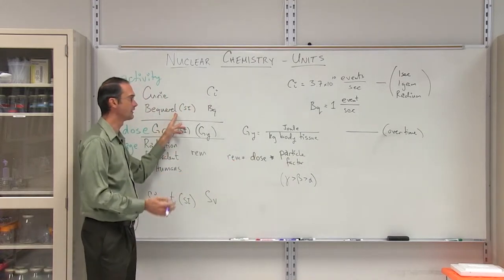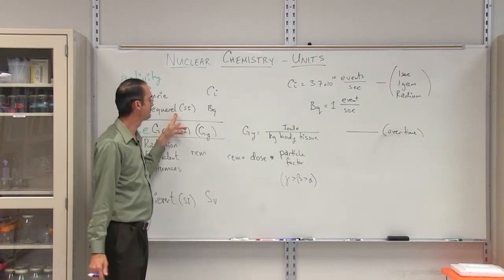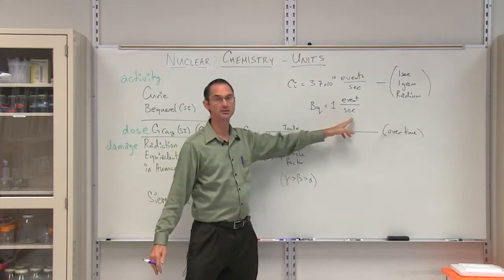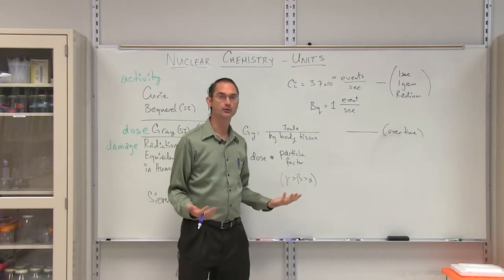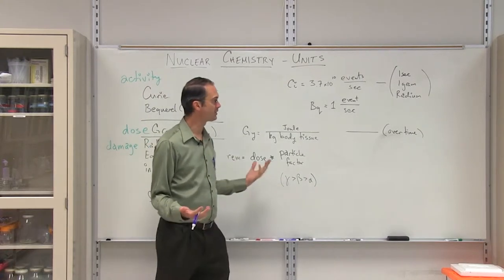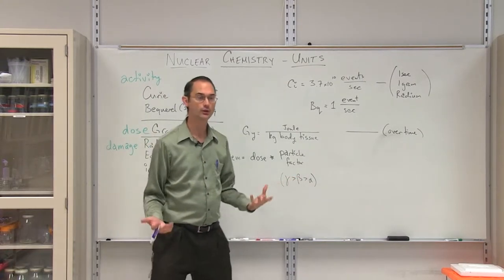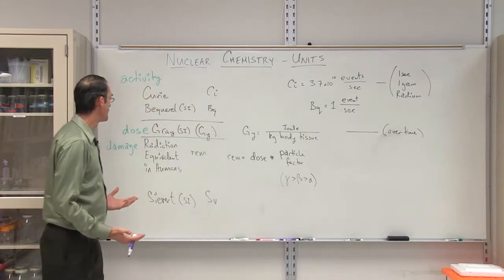The next thing is you have a Becquerel, a much simpler unit, which is simply one event per second. That's going to be the rate. As you can see, if you're using radium or any other radioactive element, the Becquerel probably isn't going to be a very useful unit, and the Curie will.